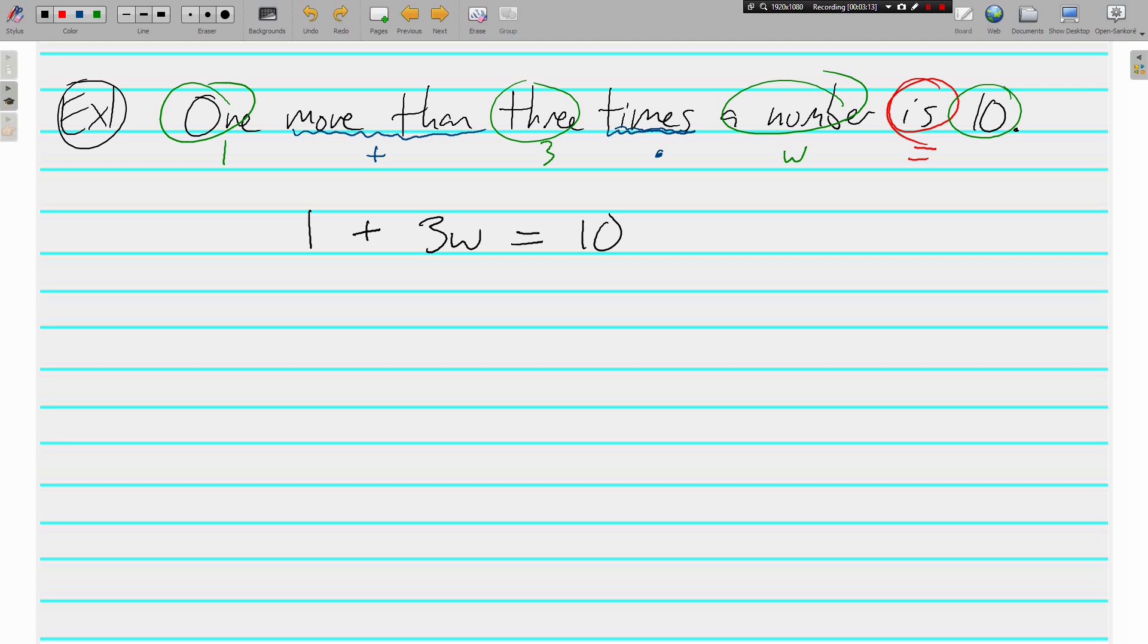but for three times w, I think it's easier. It's going to make things easier if you just do 3w, when they're right next to each other and there's no symbol. It means to multiply, so I think that's easiest. And then is 10. Forgot to circle my 10 in green. All right, now,